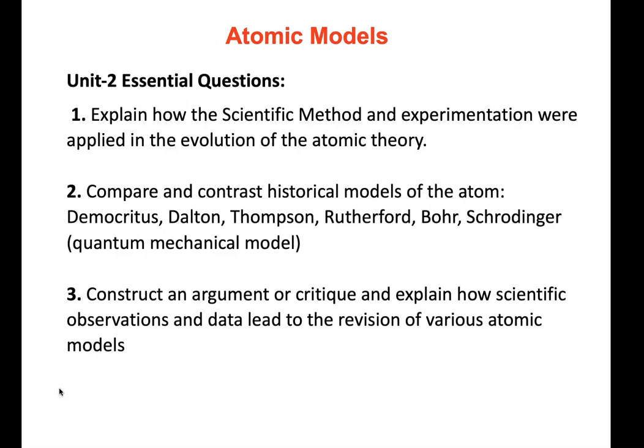There are three essential questions you should be able to answer in the atomic models section, covering sections 2.1 through 2.3. The first is: explain how the scientific method — observations, hypotheses, experiments, theories, and laws — progress from one to another. Number two: compare and contrast historical models of the atom from Democritus to the Schrödinger model, or the quantum mechanical model.